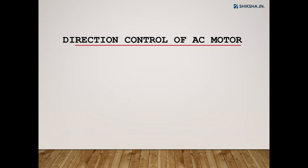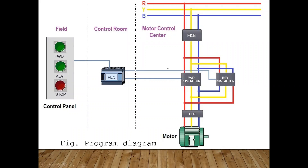We want to control the direction of an AC motor — changing from forward to reverse and reverse to forward. For that, the conventional method requires two different contactors: a forward contactor and a reverse contactor. As shown in the diagram on the right-hand side, to change the direction of any AC motor we have to reverse two of the three supply phases — R, Y, B. Any two supplies reversed will automatically change the direction.